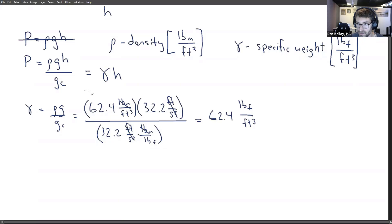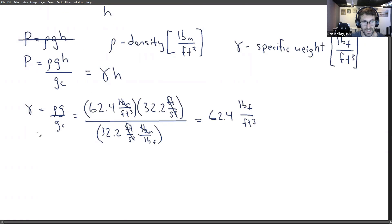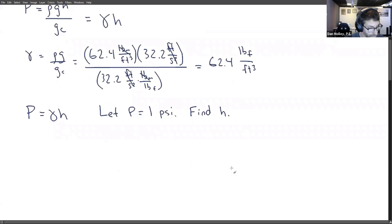Okay, so then let's come back to pressure because all of this is just to sort of establish gamma as an idea that we can take and use. But what we're really interested in doing is going from pressure to length units. So we're going to apply pressure equals gamma H to water and just for the sake of conversation, let's let P equal one PSI. And we'll find H. In other words, what is the height of a column of water that exerts the pressure of one PSI?